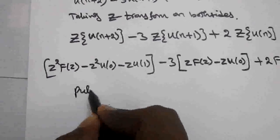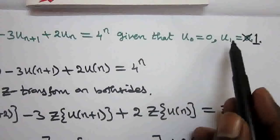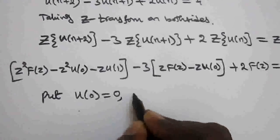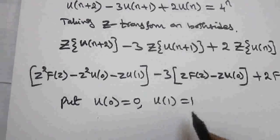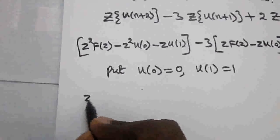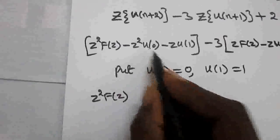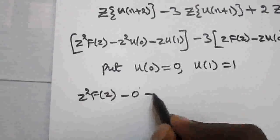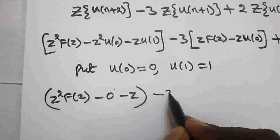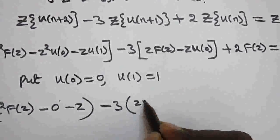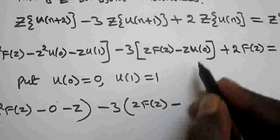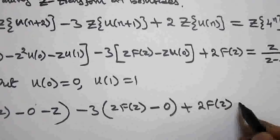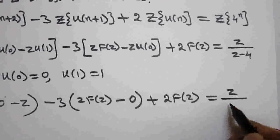Now substituting the given values: u(0) equals 0 and u(1) equals 1. So we get: z²·F(z) minus 0 minus z, minus 3 times (z·F(z) minus 0), plus 2·F(z), equals z/(z−4).